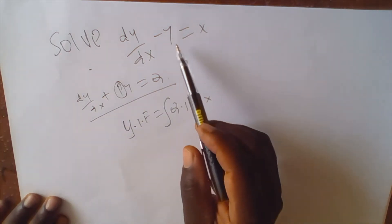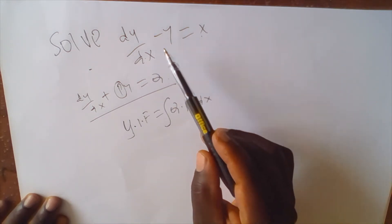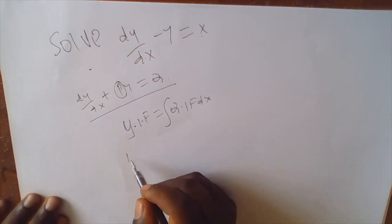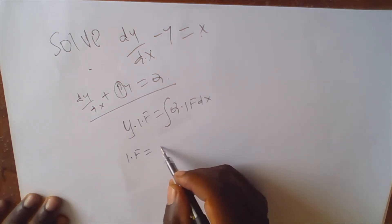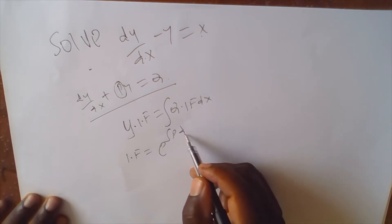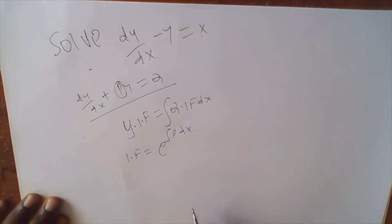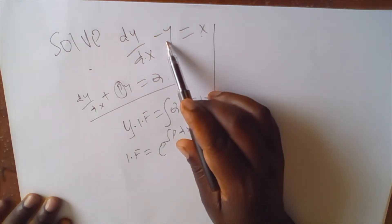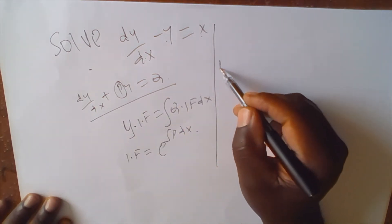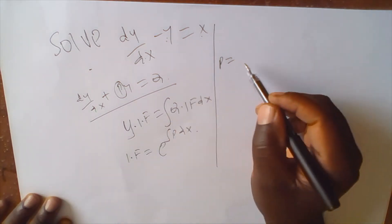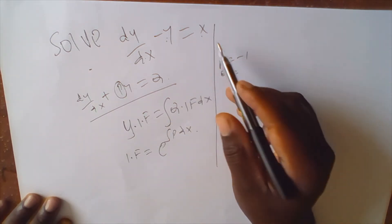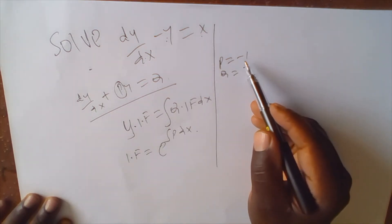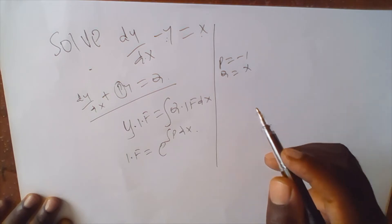When we are given an equation, we need to identify the integrating factor. We must know that the integrating factor is given by e to the power of the integral of P dx. From the given equation, P equals negative 1 and Q equals 2x.